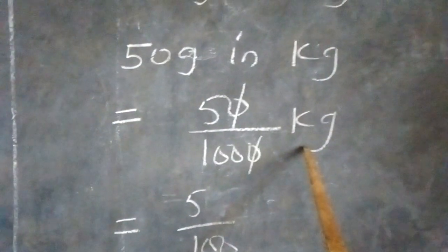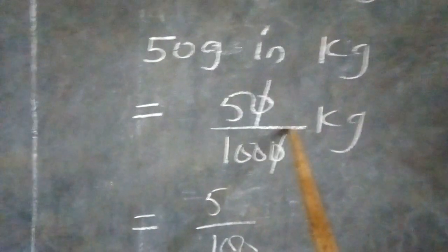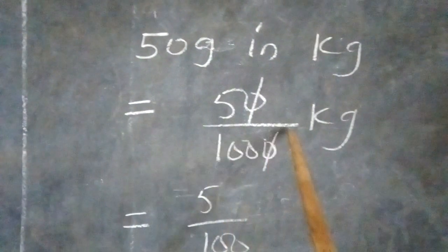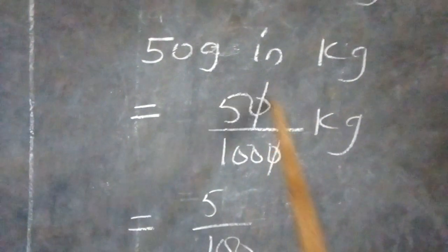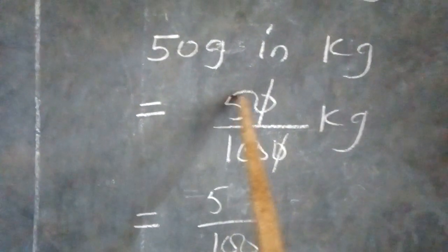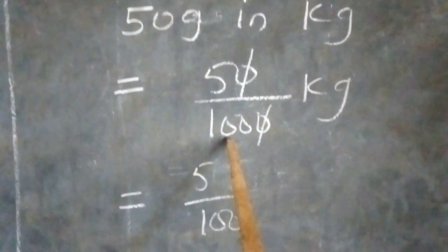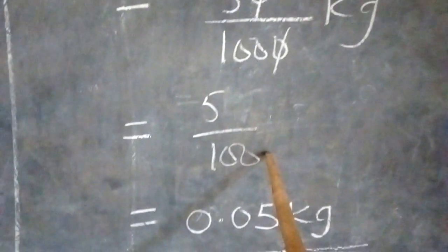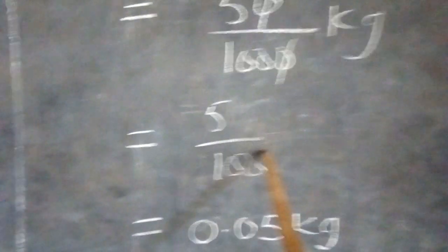50 divided by 1000. Zero can take care of zero, zero cancel zero. Then we are left with five over 100, and that is what we have here, five over 100.